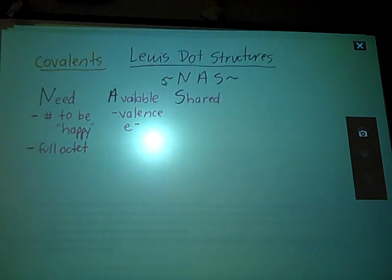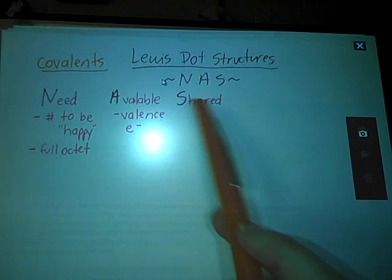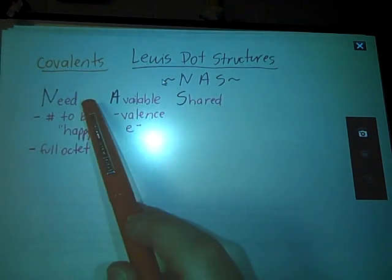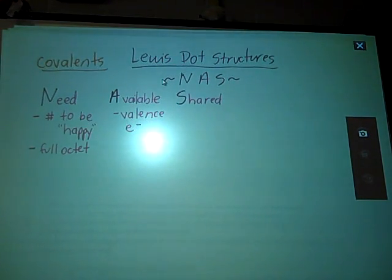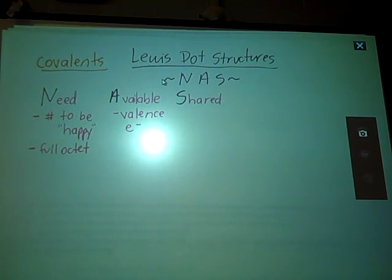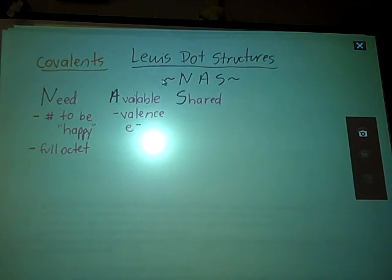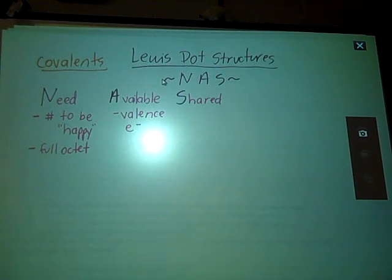NAS stands for Need, Available, Shared. Need means how many electrons do you need to be quote-unquote happy, or energetically stable. It's typically a full octet for most atoms on the periodic table — they want eight valence electrons to be energetically stable. We do have exceptions: hydrogen and helium are good with two electrons, and boron is happy with six valence electrons.